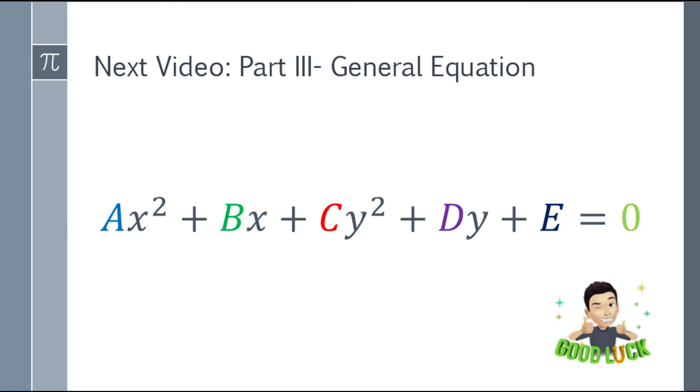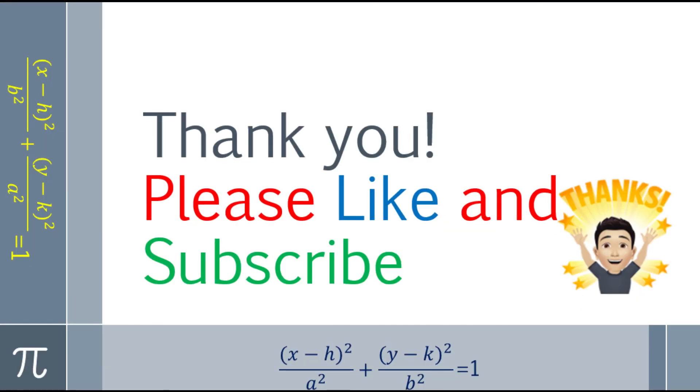Alright, so that's the end of the video of Pre-Calculus Ellipse Part 2. Next video will be Part 3, General Equation of the Ellipse. We have the equation ax squared plus bx plus cy squared plus dy plus e equals 0. So, how do we solve that when given that equation? If you would like to comment or suggest another Latin language video, please comment down below. Again, this is James, your Latin language instructor. Please like and subscribe. Thank you. Bye-bye.